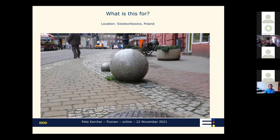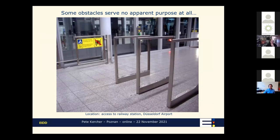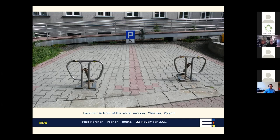Some obstacles serve no purpose at all. There is a barrier between the railway station and the airport in Düsseldorf that is always open. When a train arrives, everybody rushes to the terminal as fast as possible, and this barrier seems to be there just to hurt them. That is simply nonsense. Reserved parking for people with disabilities in front of the social services office in Chorzów is good to reserve, but how do you get in there if you're on your own? If you have a sign, it should always lead to a recognizable and usable infrastructure. Along the river Daugava in Riga there was a sign I complained about to the city architect, and they removed it because it's frankly insulting to have something like that.